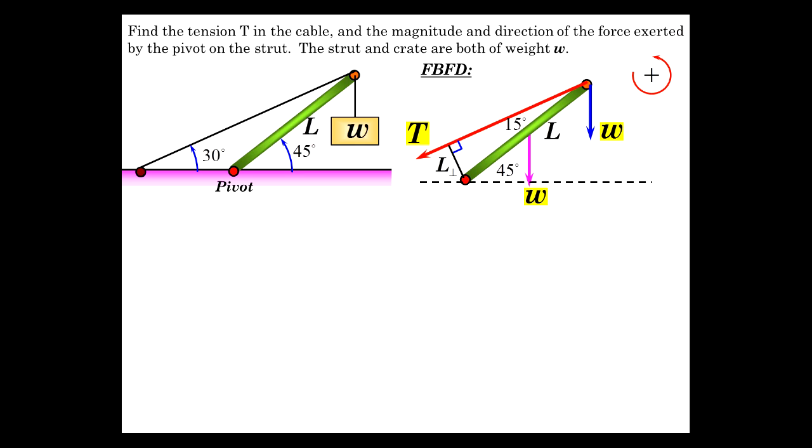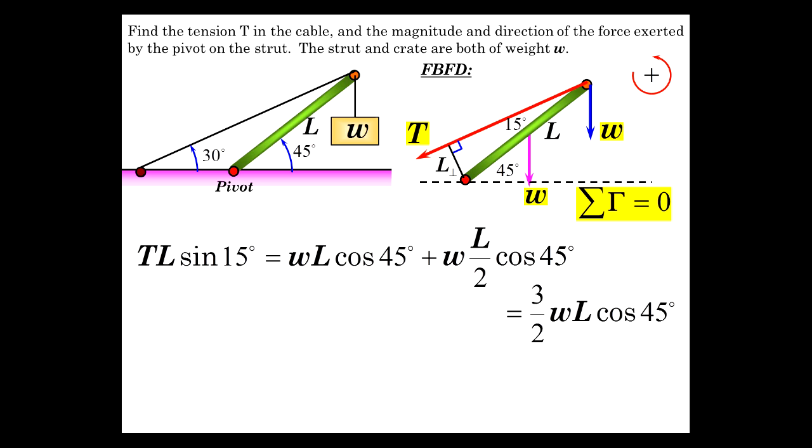We can see our counterclockwise torque provided by this radius through this line of action here. Let's write that out. TL sine of 15 equals WL cosine of 45 from this one, the weight at the end plus the center of gravity is WL over 2 cosine of 45. We could have said sine of 45, but what I'm doing is the force times the perpendicular radius, which is cosine of 45. So that's 3 halves WL cosine of 45, giving us a tension of, when we divide both sides by sine of 15, 4.1W.